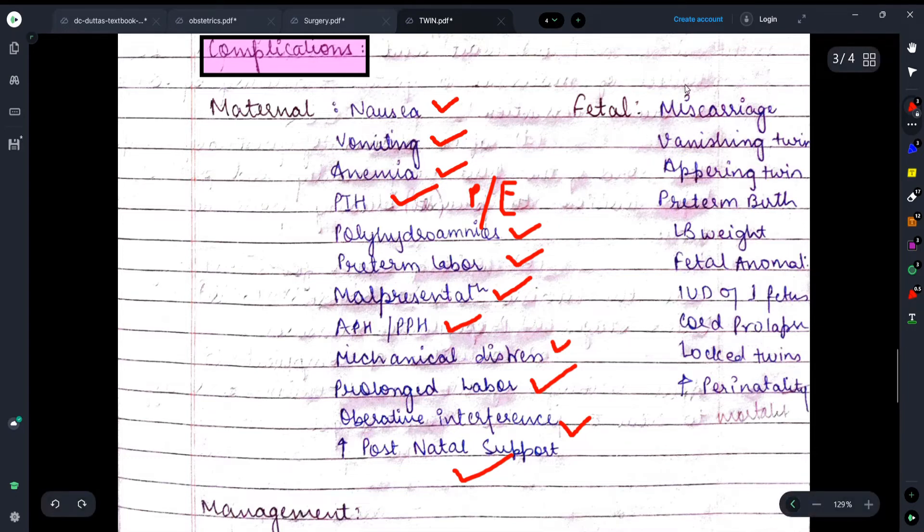Moving on, let's talk about fetal complications. There are chances of miscarriage. There are chances of vanishing twin. Sometimes appearing twin happens - that means the mother didn't know she had twin pregnancy. One twin absorbs all the nutrients excessively, due to which the other twin doesn't develop properly and it vanishes, just in the form of some debris-like material that we see there.